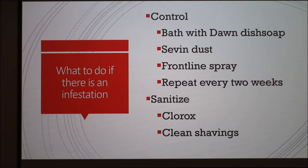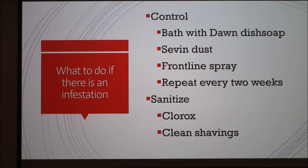For the birds themselves, there are a variety of different sprays, but we use Frontline spray that you would get for your dog or cat, available at Tractor Supply. We spray it under each wing, at the base of the neck, the back feathers, and around the vent. Make sure you spray it on the skin. You do this every two weeks until you're sure the mite problem is gone. And even if they don't have mites, it's okay to treat them as a prevention — prevention is easier than treatment.